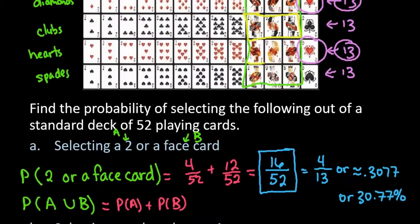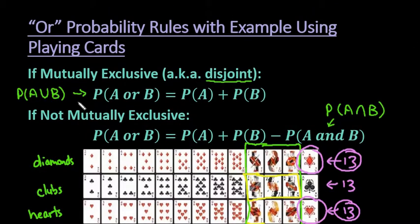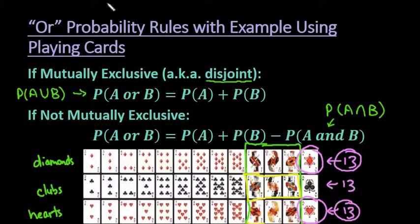Just remember that when doing OR probabilities, you need to ask yourself: can they occur at the same time? If yes, they are not mutually exclusive and you must subtract the overlap. If there is no overlap, they are mutually exclusive and you simply add. As always, thanks for watching. If you have any questions or additional topics you'd like me to cover, please let me know.